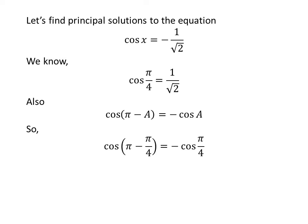Applying the above identity, cosine of pi minus pi upon 4 is equal to minus cosine of pi upon 4. Since pi minus pi upon 4 equals 3 times pi upon 4, and plugging in the value of cosine of pi upon 4, we get cosine of 3 times pi upon 4 is equal to minus 1 upon square root of 2.